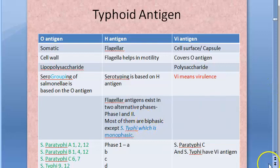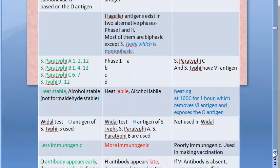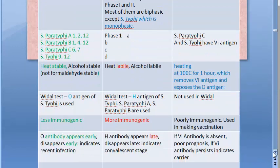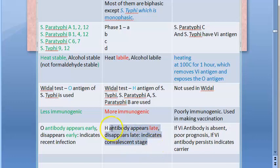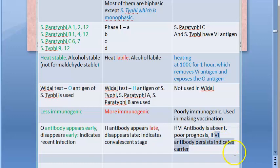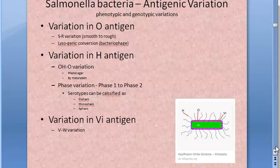The H antigen is heat labile. The H antigens of Salmonella typhi, paratyphi A, and paratyphi B are used in the Widal test — paratyphi C can be ignored. H antigen is more immunogenic; the antibody to H appears late and disappears late, indicating convalescent stage. To summarize: O antibody indicates recent infection, H antibody indicates convalescent stage, and if Vi antibody persists, it indicates a carrier state.